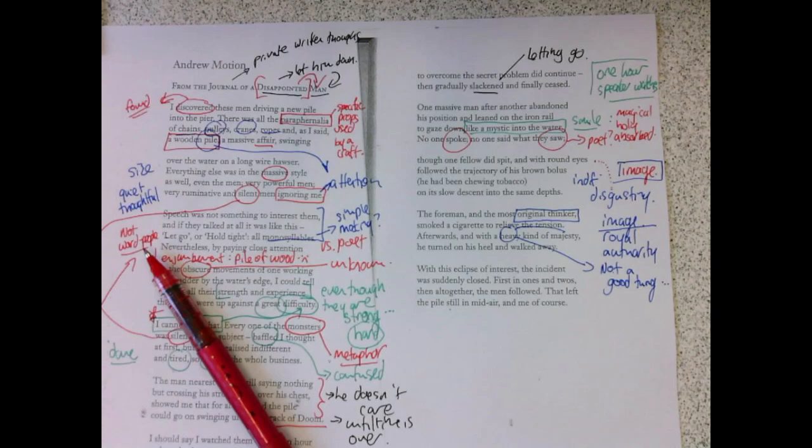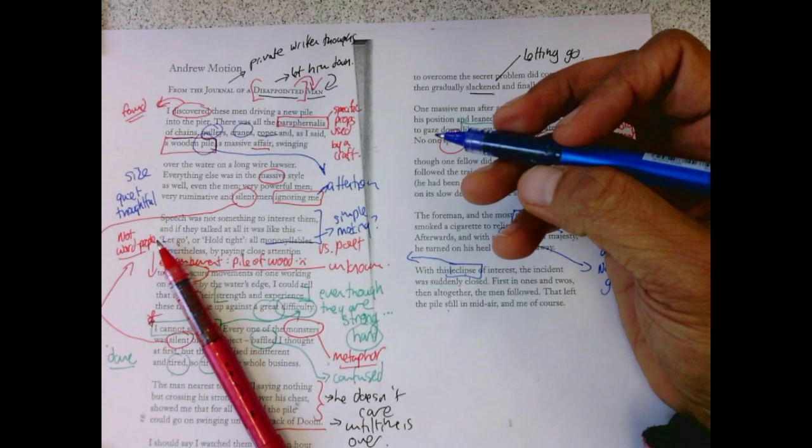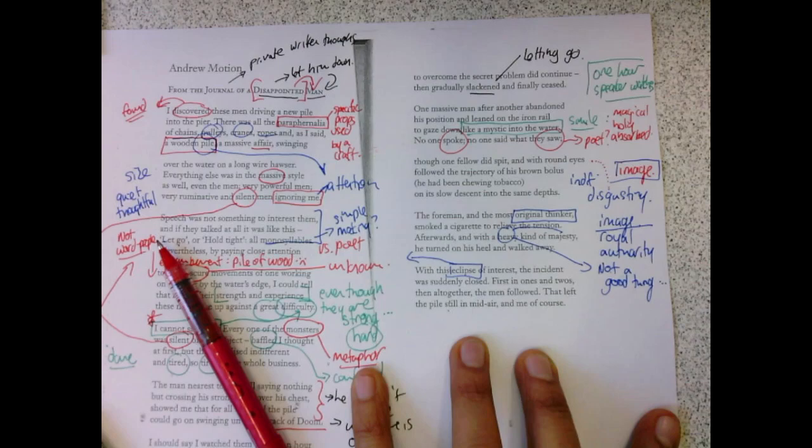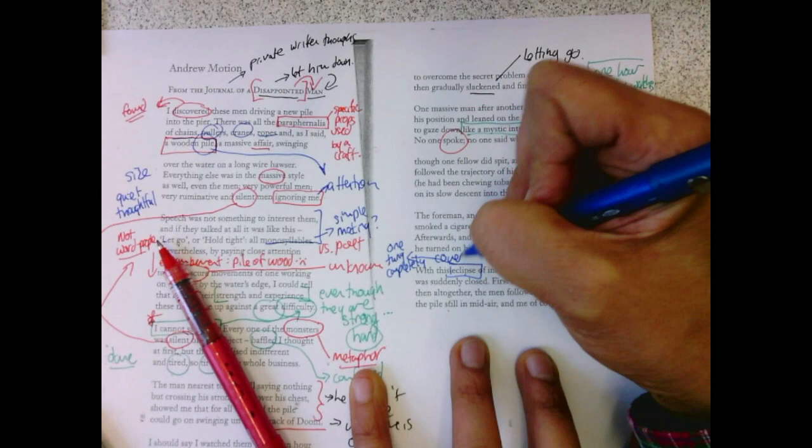With this eclipse of interest, and that word I love, the eclipse is the moon covering the sun in such a way that it covers its brightness, its light to the earth. So, this eclipse of interest, one thing, completely covering another. The incident was suddenly closed.